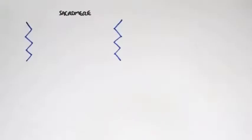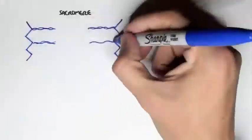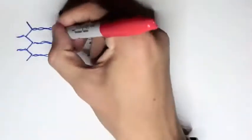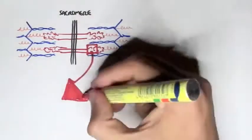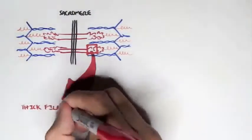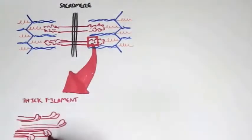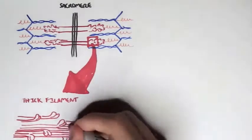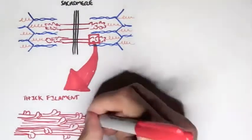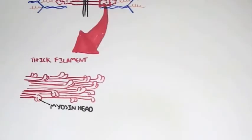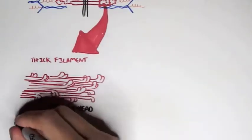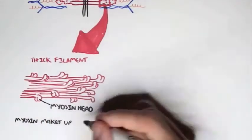So just recapping, here's what our sarcomere looks like. It contains the thin filaments and the thick filaments — the thin filaments in blue and the thick filaments in red. So let's get a portion of this thick filament, and it contains many myosin heads, usually in doubles, as you can see. The protein myosin makes up the thick filaments.